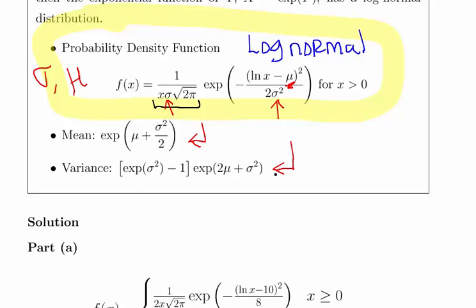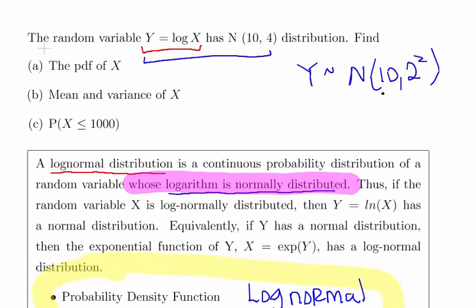Essentially, it's a matter of determining what mu and what sigma are, and we have them there. So mu is equal to 10 and sigma is equal to 2.